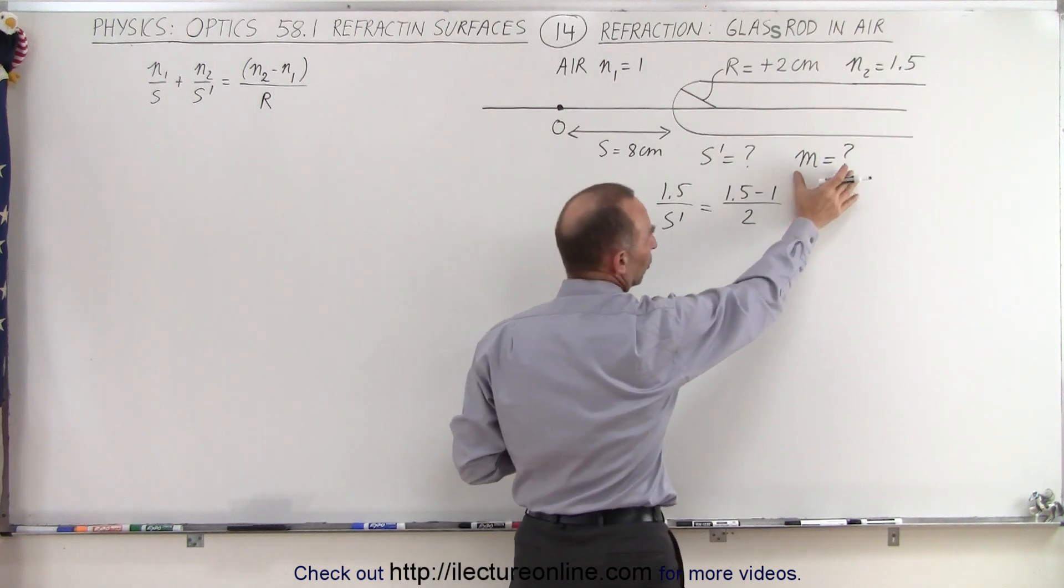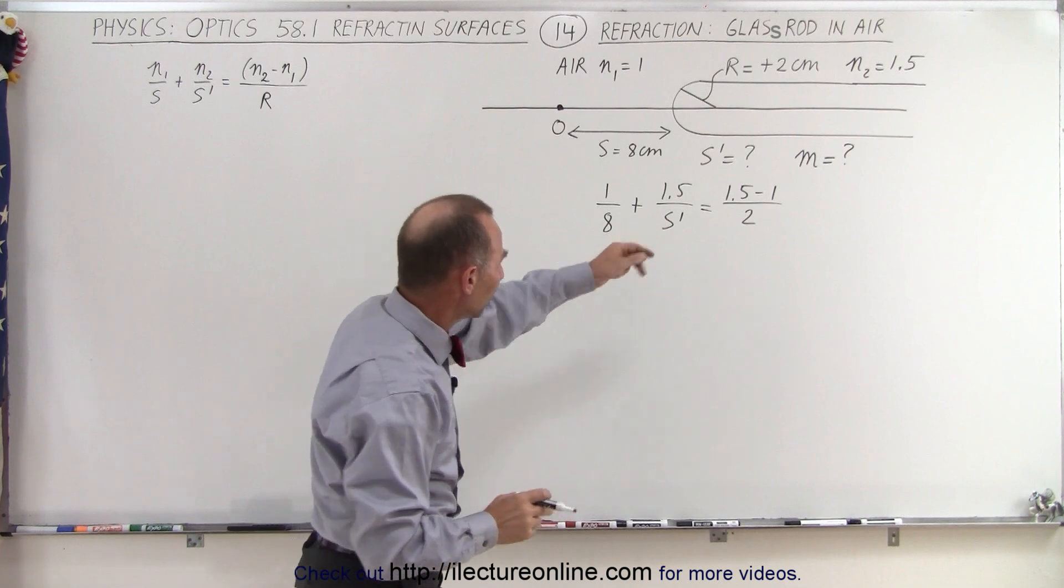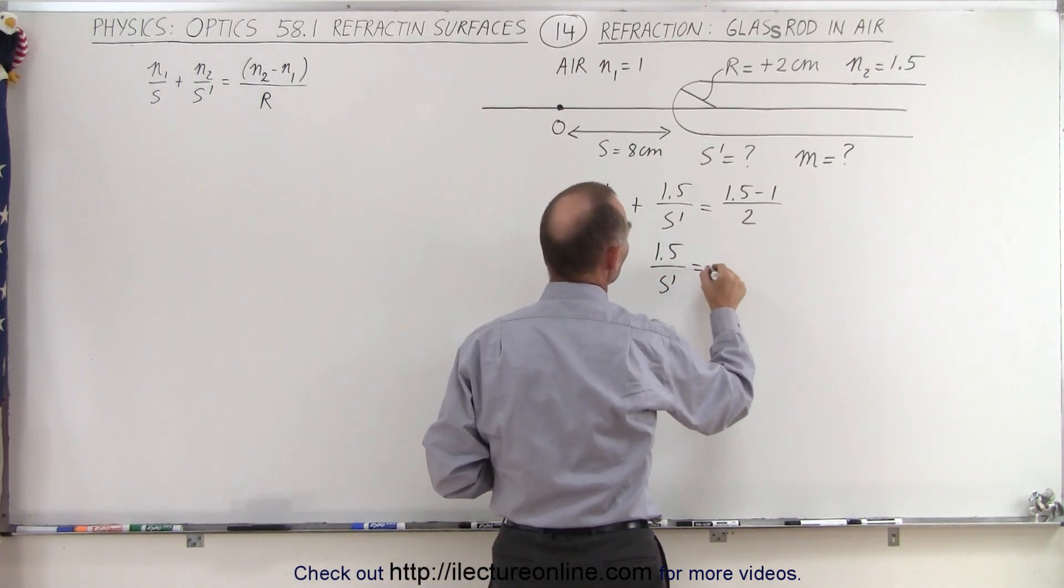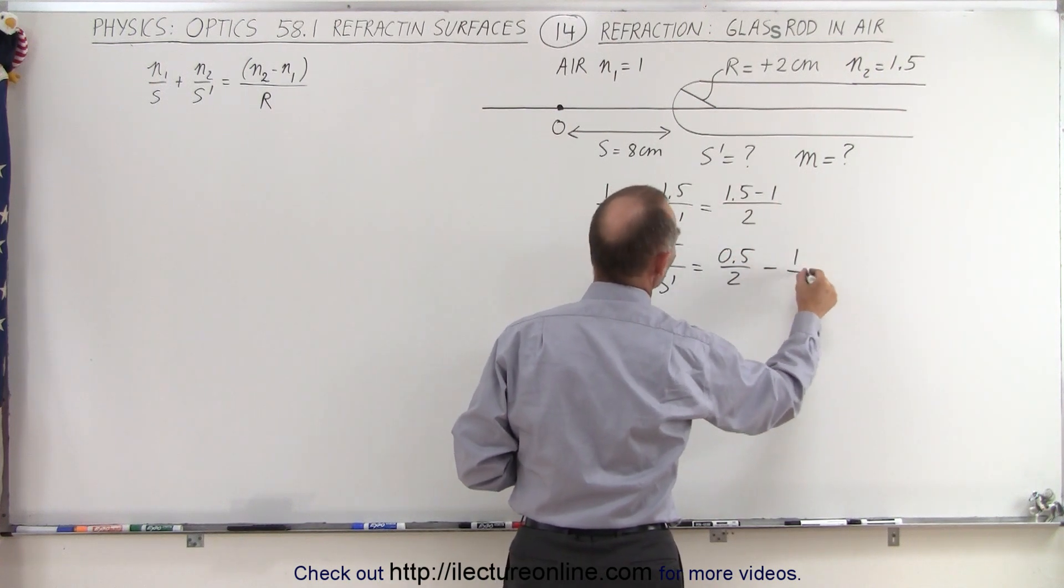Notice eventually we're also going to find the magnification of that image. Moving this to the other side, we end up with 1.5 over s prime is going to be equal to, that's 0.5 over 2 minus 1 over 8.